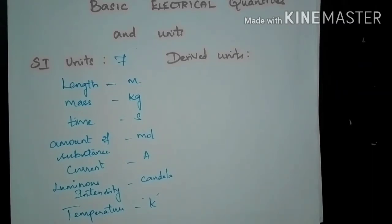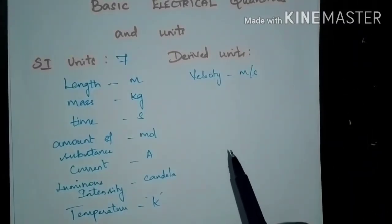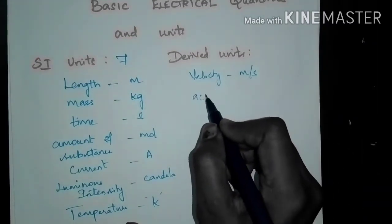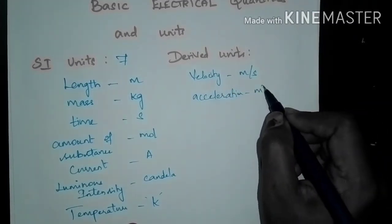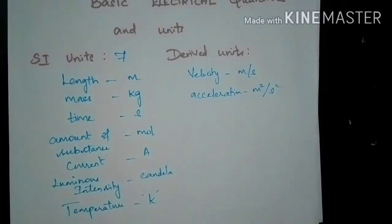Next are derived units. As the name indicates, the units are derived from the basic SI units. For example, velocity has derived units of meter per second, which is the rate of change of displacement per time. Acceleration is the rate of change of velocity, with units of meter per second squared. Terms like energy, work, power, and force also come under derived units — each having units derived from the basic SI units.